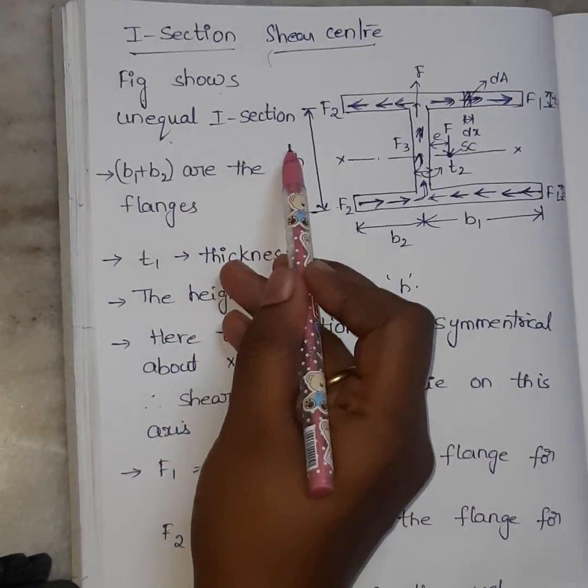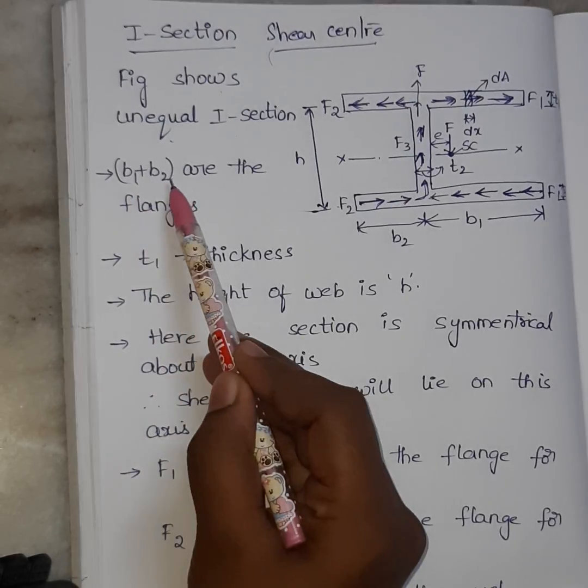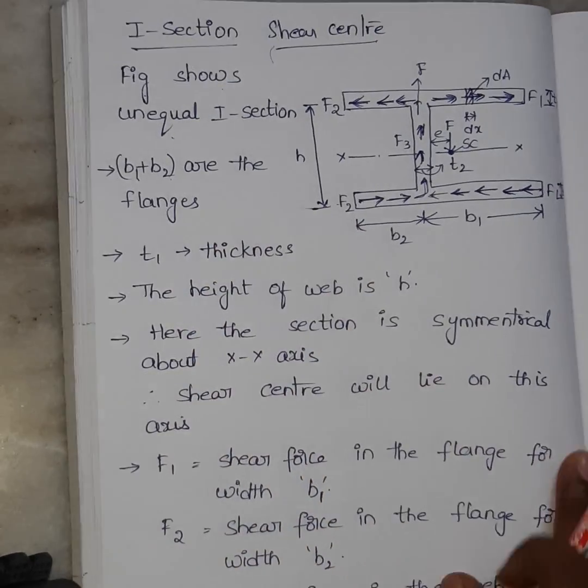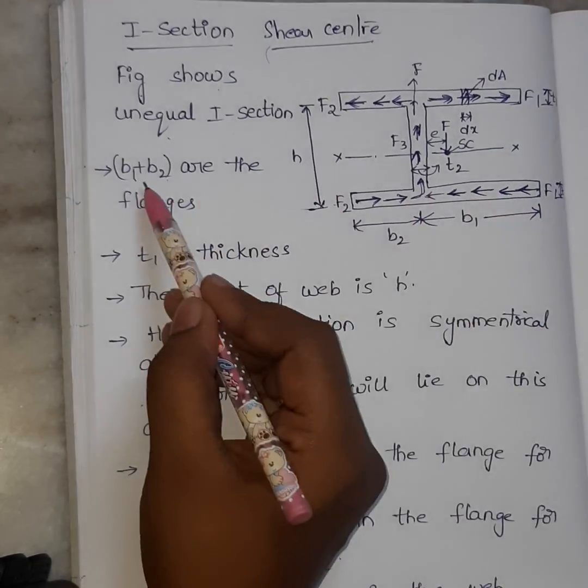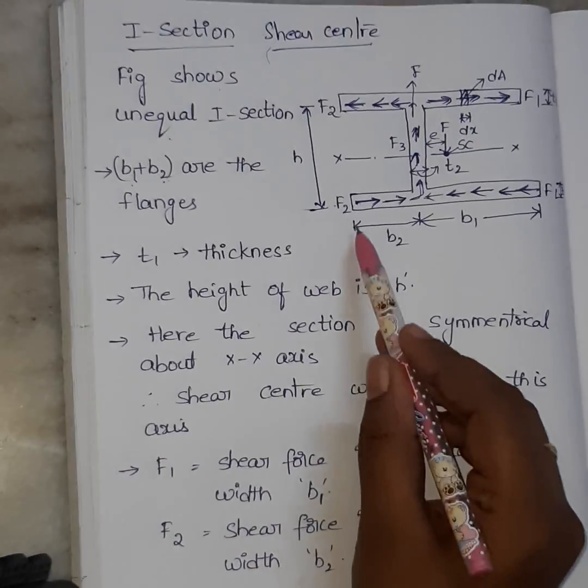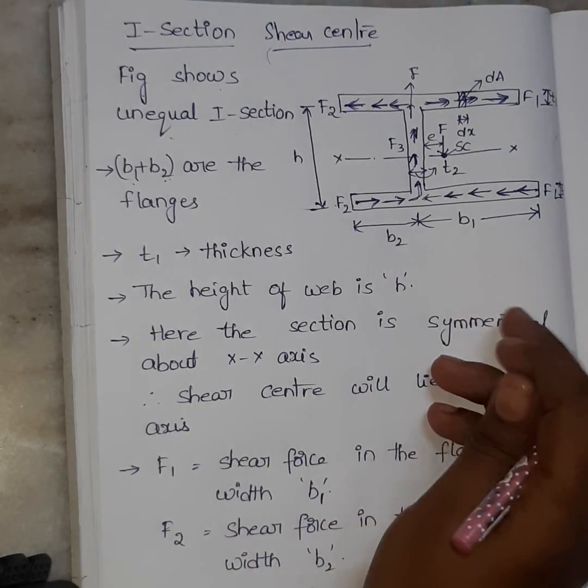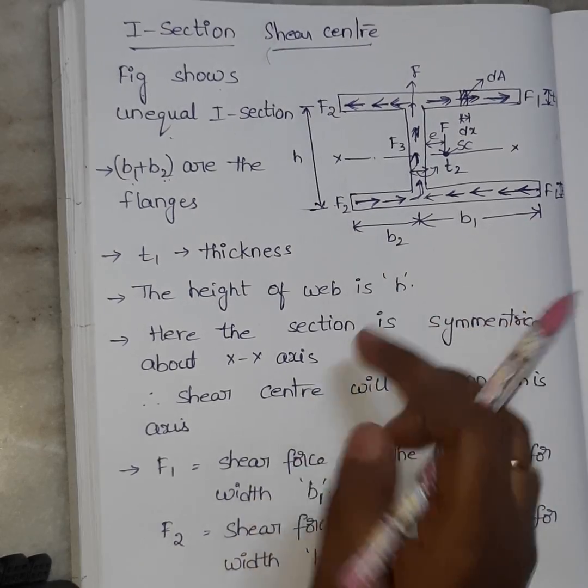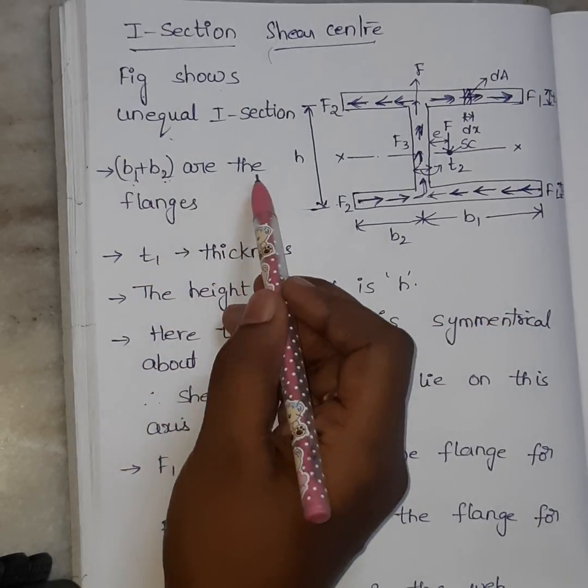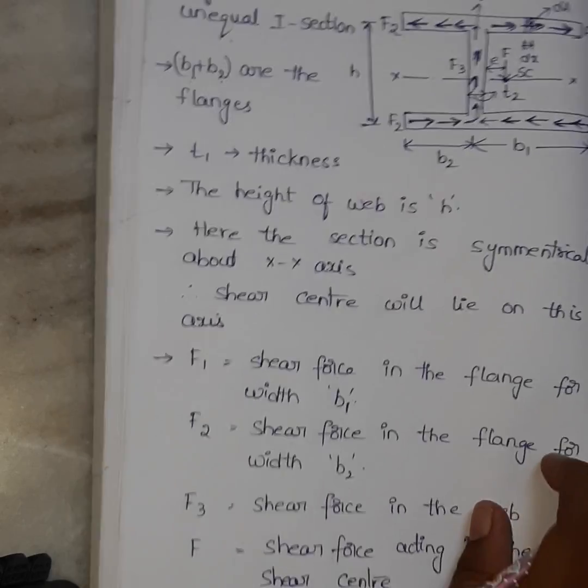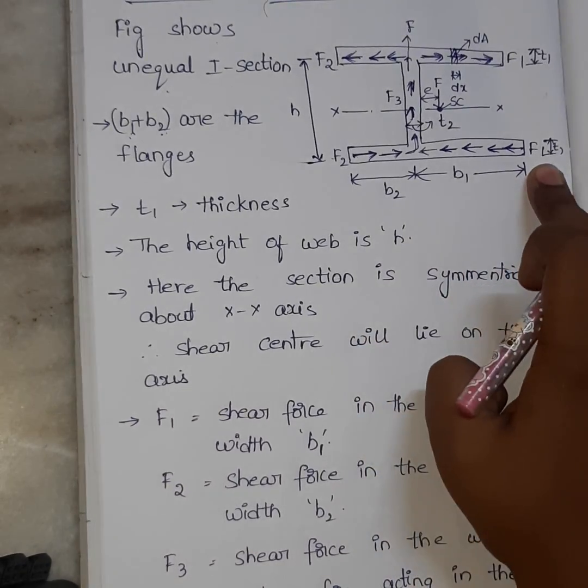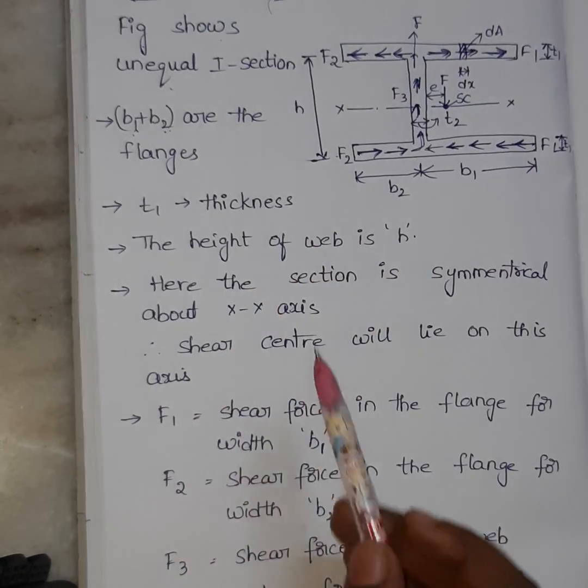Figure shows unequal I-section. Next, B1 and B2 are the flanges. See here, varying length. Why I have written B1 plus B2 means if I need the overall breadth, I should add both. So I have written B1 plus B2 are the flanges. Where here in this diagram, T1 is the thickness.